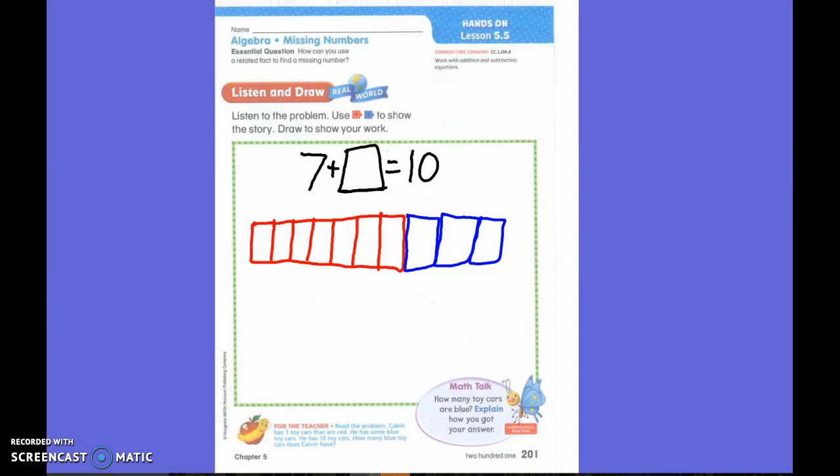So what number is missing, first grade? Three. Mathematicians, how can you check yourself to make sure that our answer is right? We're going to count. We're going to check it, right? So seven plus three, does that really equal 10? Yes. Let's look at our number line.